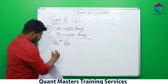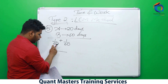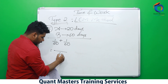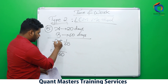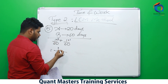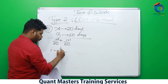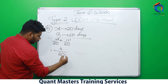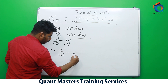Now LCM of 20 and 60 — can I say 60 is a multiple of 20? So 60 is the LCM. 20 goes into 60 three times, and 60 goes into 60 once. So we get 3 plus 1, which is 4. Can I say 4/60 is nothing but 1/15?